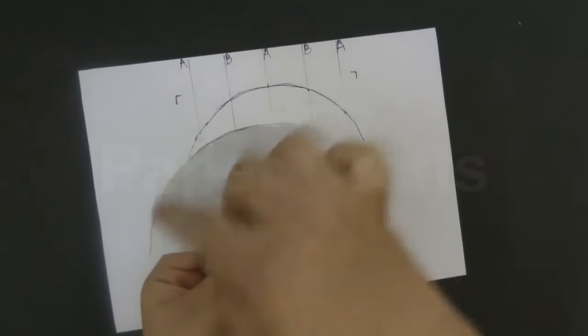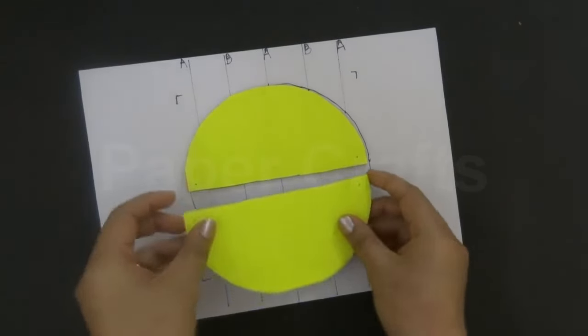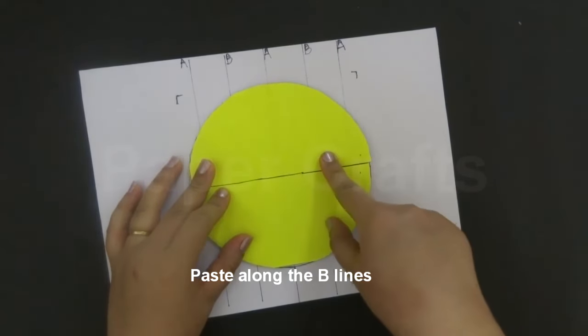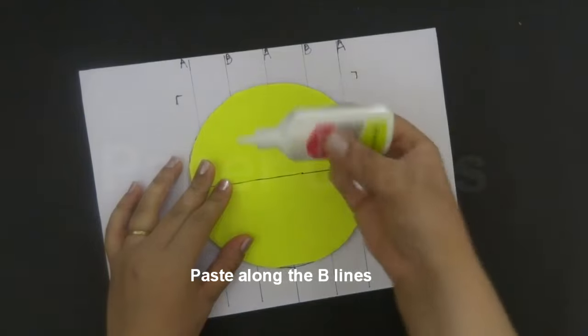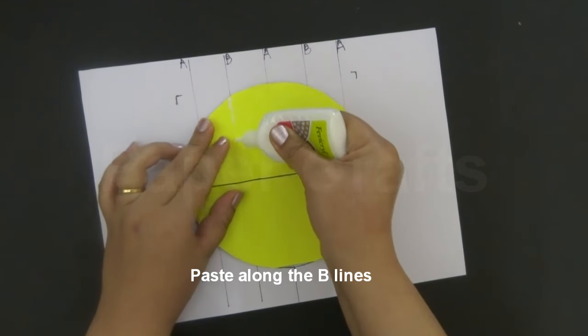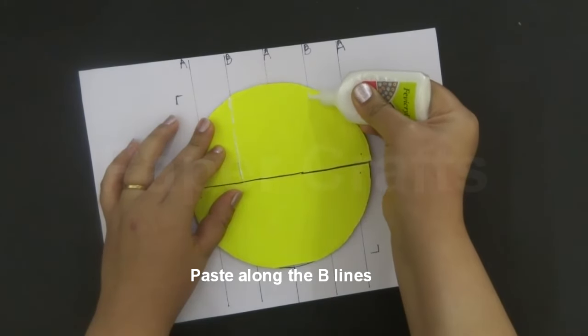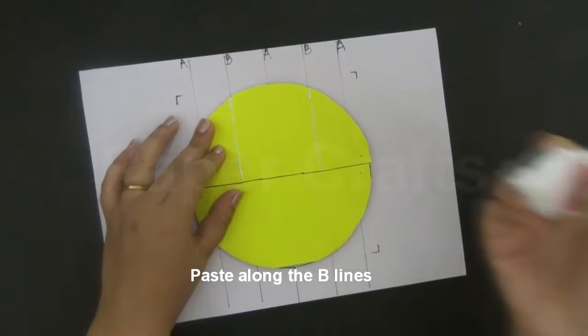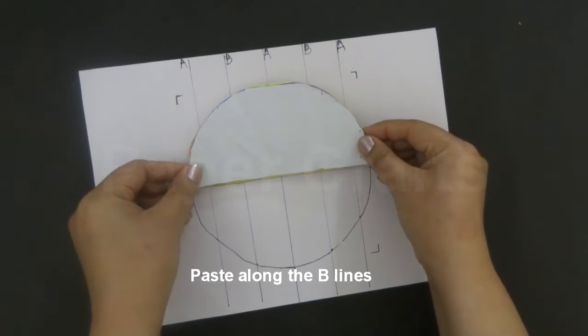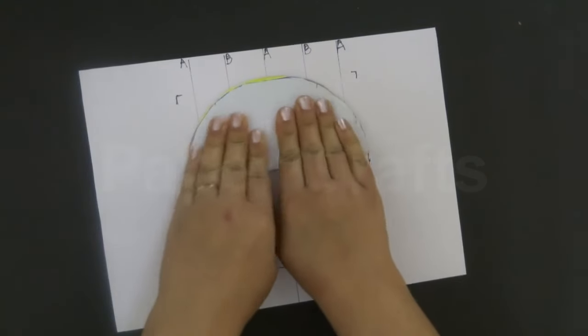Once we have cut the sheets into the semicircle shape we will now make it upside down and paste them along the B lines as the previous layer was pasted on the A lines. We will now cut them in the same way.